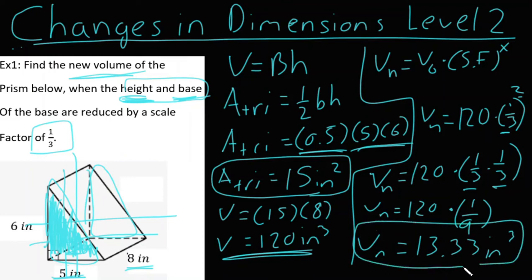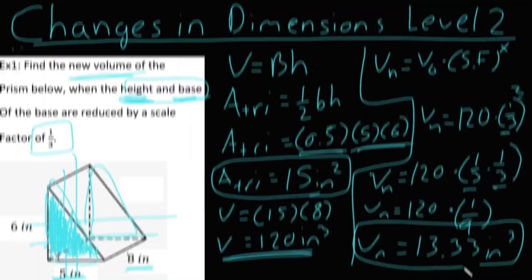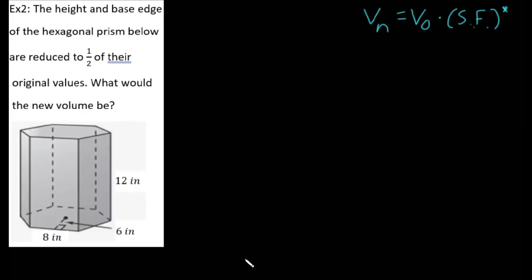Alright, let's move on now to our second example. So now we have example two where the height and base edge of the hexagonal prism below are going to be reduced to one-half of their original values, and we want to know what would the new volume be. Okay, so we look at it. We see we have a hexagonal prism. Our first thing we always want to do with a prism is we want to shade the base, absolutely. So I come down here and I want to shade away. There's my base.